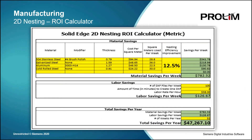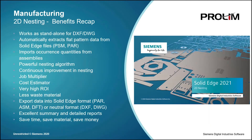Now that you've seen the capabilities and benefits of the 2D nesting product in action, as an additional inclusion with Solid Edge 2021 2D nesting, you now have the ability to see the cost savings in real time with the new 2D nesting ROI calculator available with this download. You can easily configure and update this calculator based on your own current material pricing, labor costs, and frequency of the nesting project. Quickly, you will visualize the material cost savings that can pay for this product in a very short period of time. The ability to extract the 2D flat pattern from Solid Edge files, easily import and export DXF and DWG files, as well as the job multiplier, results in less wasted material and a high return on investment.